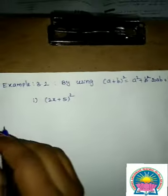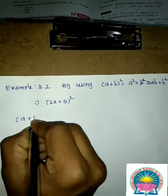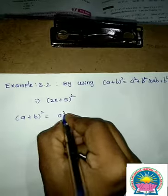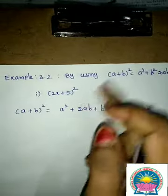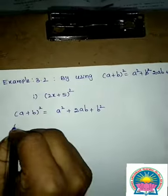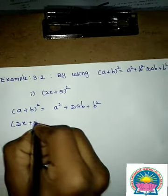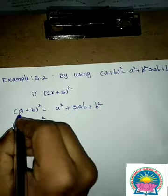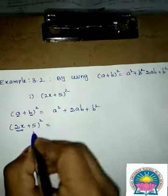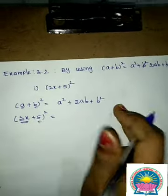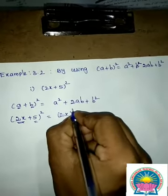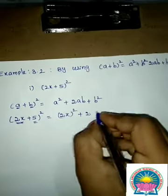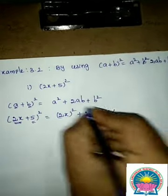This identity is based on the (a + b)² format. We know that (a + b)² = a² + 2ab + b². Using number sums: given question is (2x + 5)². This is already in (a + b)² format. So a = 2x and b = 5. Now, a² = (2x)², and 2ab = 2 × 2x × 5.